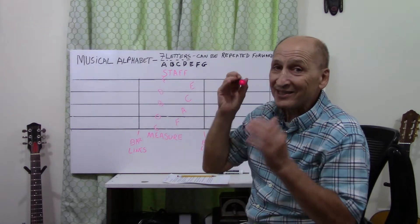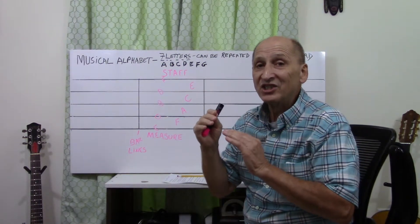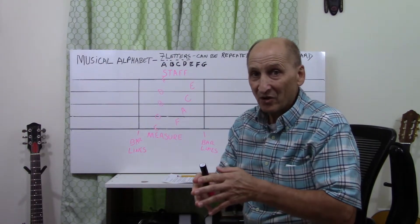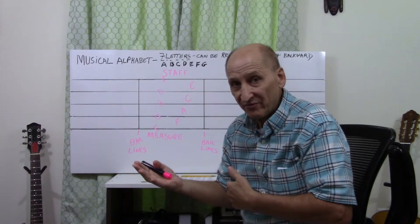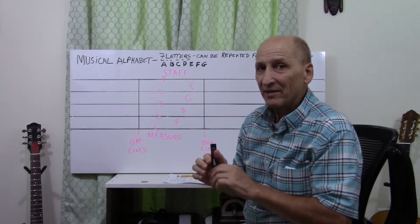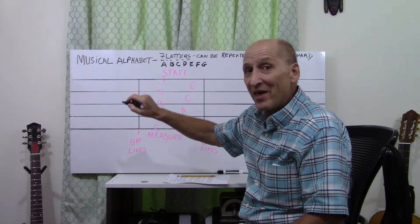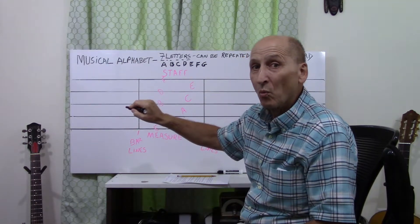It comes from a symbol called a G-clef or a treble clef. I'm going to be using the term more G-clef. Let me show you because I'm going to draw one now for you, and then I'm going to explain what it does.